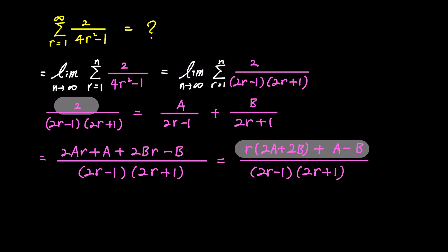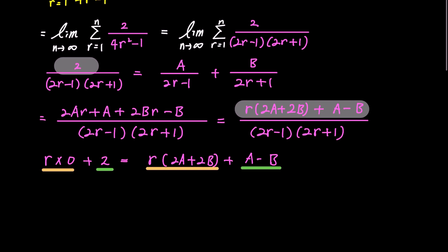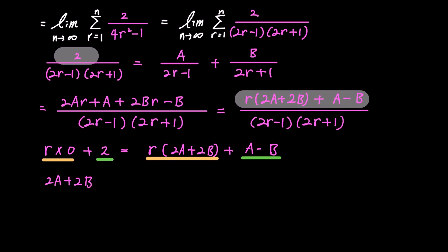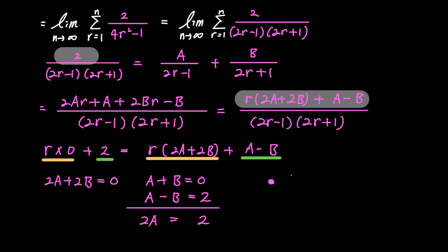Comparing the coefficients of r in both expressions, where the left side can be written as r times 0 plus 2, and the right side as r times 2a plus 2b plus a minus b, we obtain two equations: 2a plus 2b equals 0, which simplifies to a plus b equals 0, and a minus b equals 2. Adding these two equations to eliminate b, we find that 2a is 2, leading to a equals 1 and b equals negative 1.